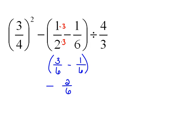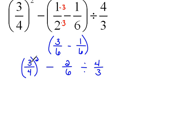Now 3/6 minus 1/6 is 2/6. Now I'm going to recopy everything else. We're just doing one part at a time. All right, so now we have (3/4)² minus 2/6 divided by 4/3.